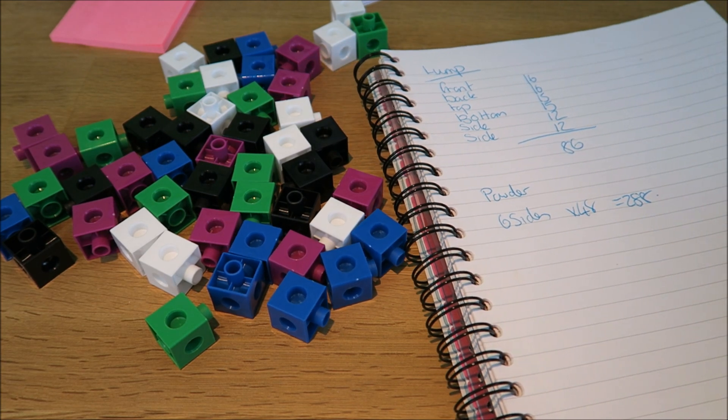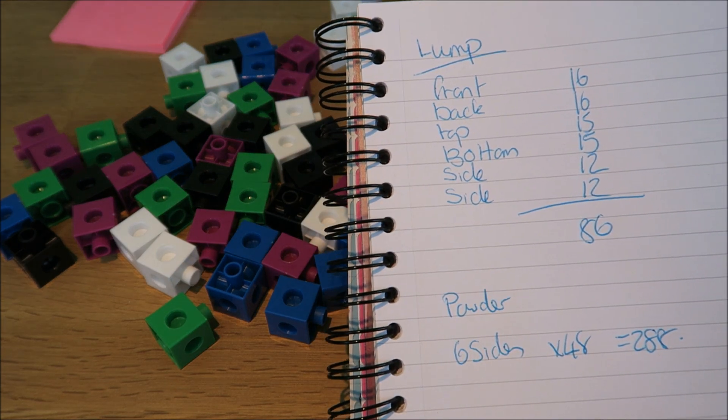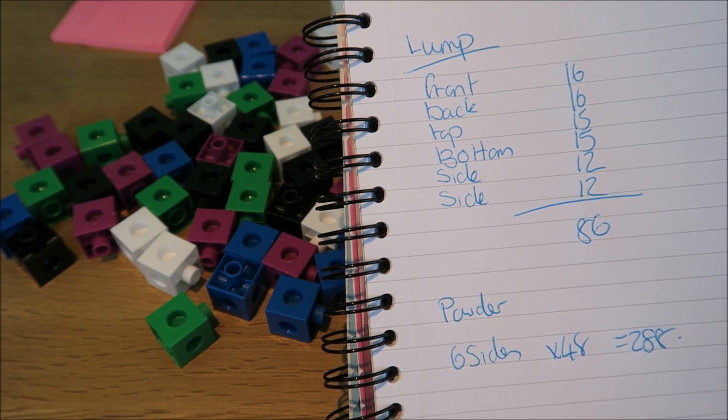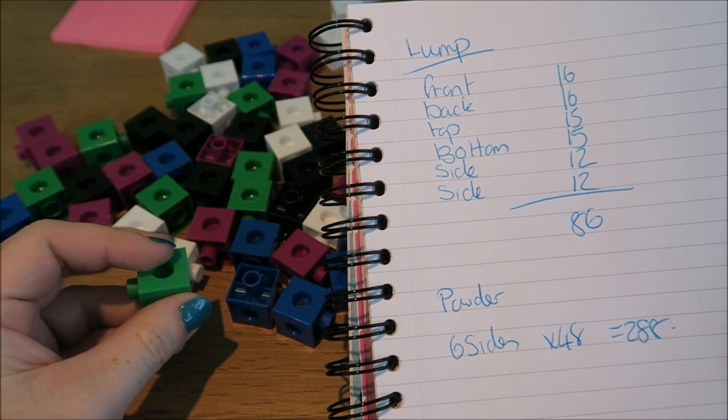So we can see when it was a big lump, counting the available sides that were available to react on the top, back, front, bottom, side side, we had 86 sites available for a reaction.